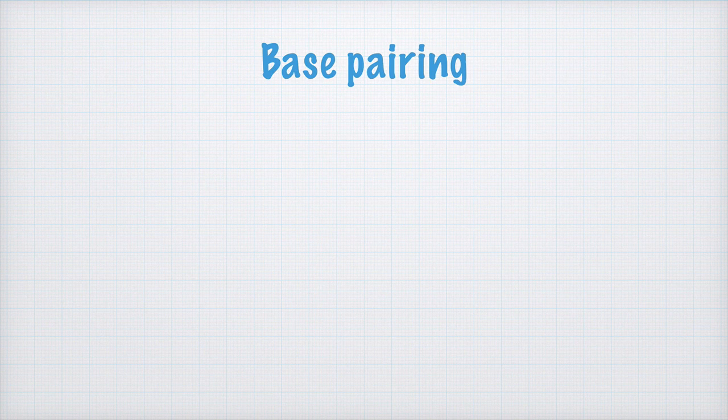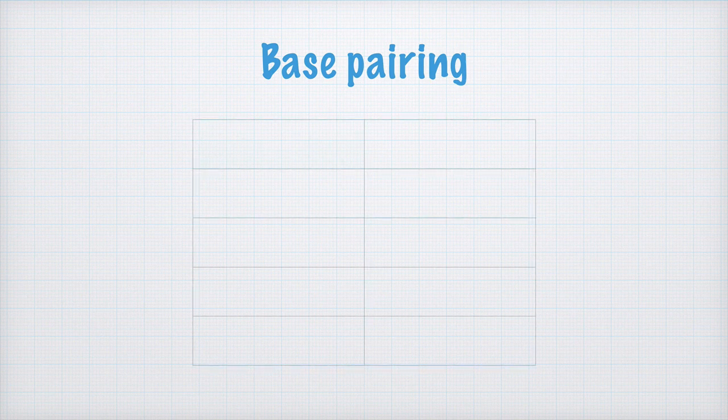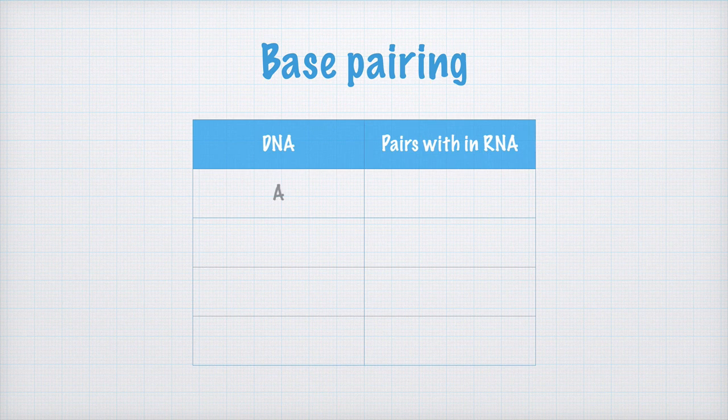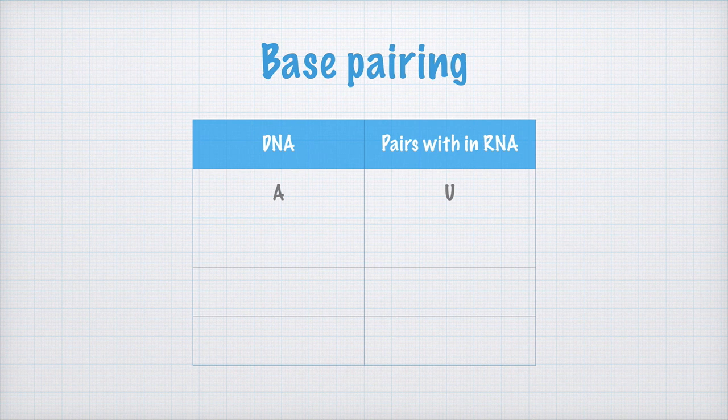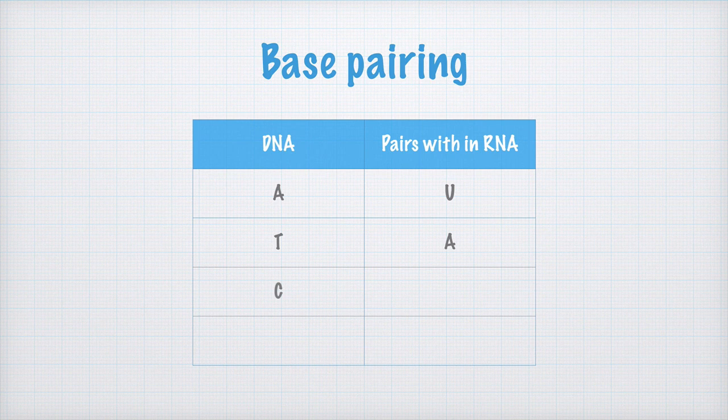Let's write something about base pairing too. We make a small table like this, and we write that in the DNA molecule if we have an A it base pairs with a U in the RNA molecule. If we have a T in the DNA it base pairs with A in the RNA, and if we have a C it base pairs with G, and a G in DNA also base pairs with C in the RNA molecule.